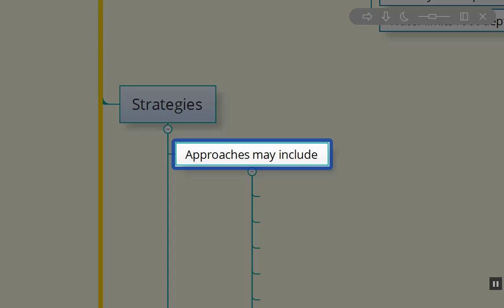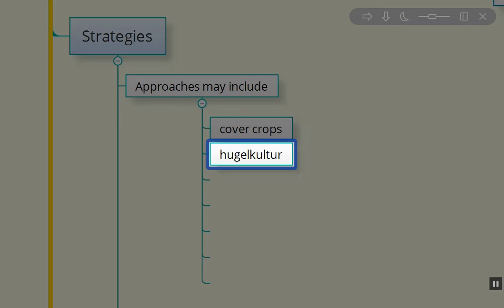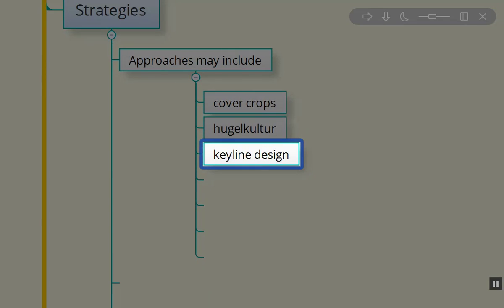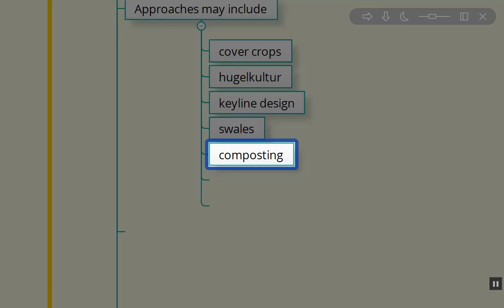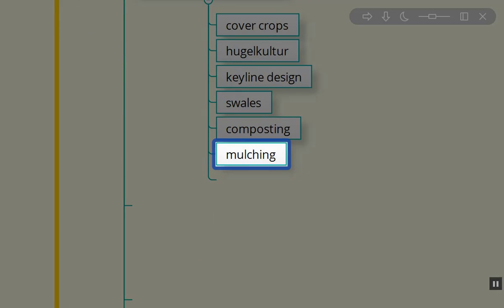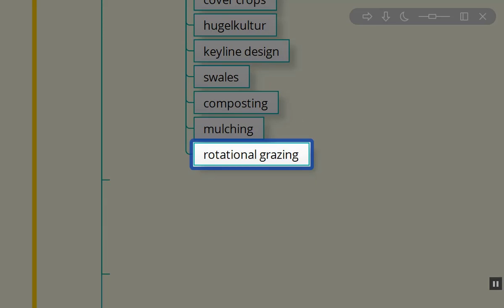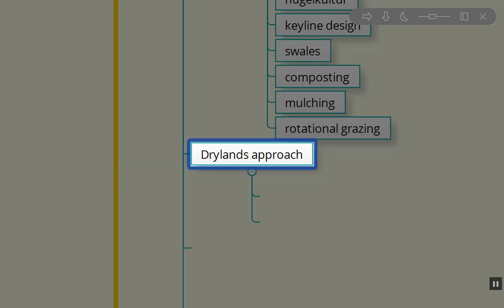What about strategies? Approaches that we can use depending on which climate zone we're in. We can use cover crops, we can use hugelculture, we can use key line design, we can use swale systems, we can do composting, we can do mulching, we can do rotational grazing. All of these systems can be utilized in order to build soil.